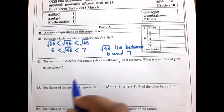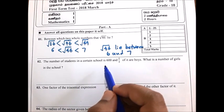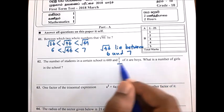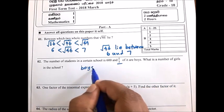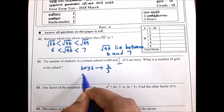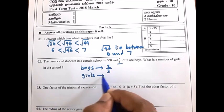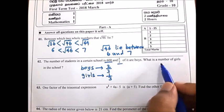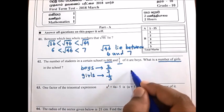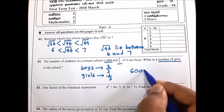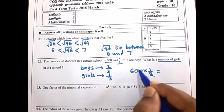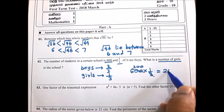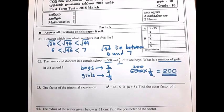Now look at the second question. In a school, 2 over 3 are boys, so 1 third are girls. Total number of students is 600. You have to find the number of girls. Multiply 600 by 1 over 3. Cancel these two. 200. There are 200 girls in this school.